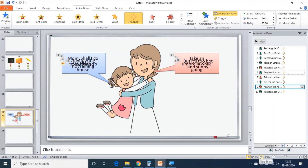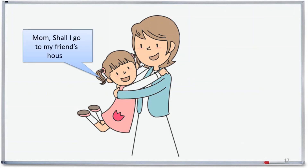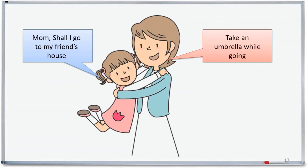Let us see the slide show — the final output. First, the mother and daughter are there. Then the callout of daughter, the first dialogue, mother's callout, mother's first dialogue.